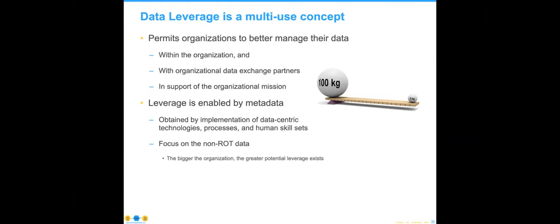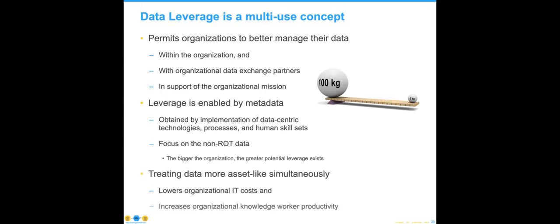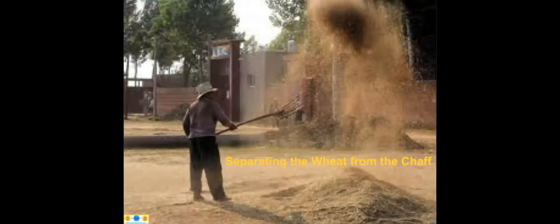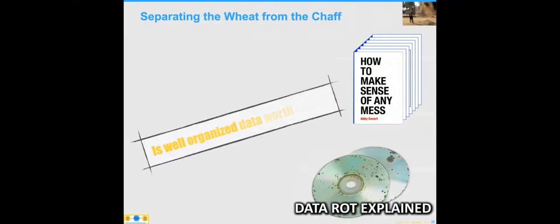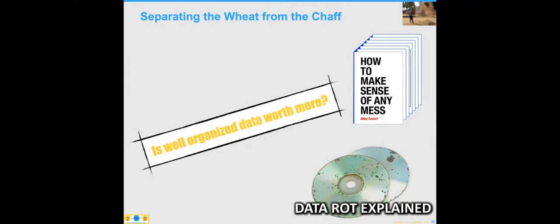The bigger the organization, the greater the potential leverage. Treating data more asset-like simultaneously reduces IT costs somewhere between 20 and 40%, and increases organizational knowledge worker productivity up to a theoretical 18%. Imagine if you could lower your IT costs and increase your knowledge worker productivity — that's a tremendous opportunity.